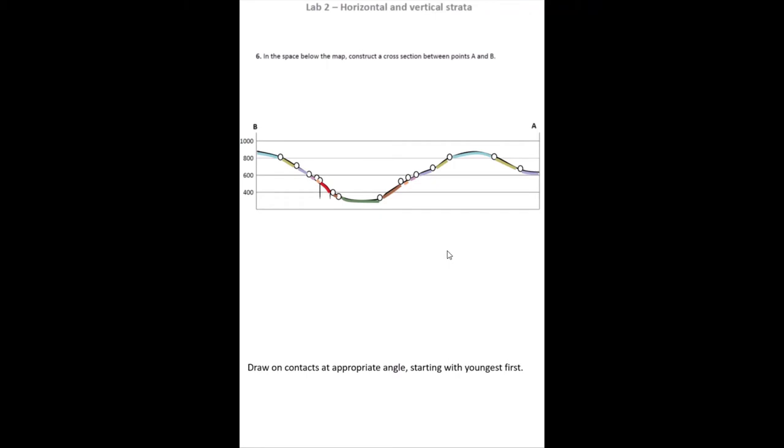So I can plot my dike, my vertical dike, straight onto the hill profile. And after I've plotted the contacts of my dike, I can plot on the horizontally bedded sedimentary rocks, the older material which has been cross-cut by the dike.